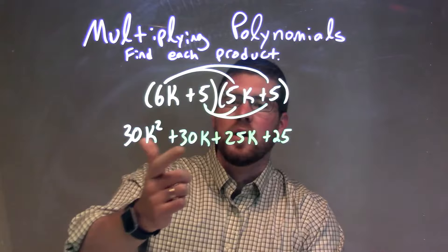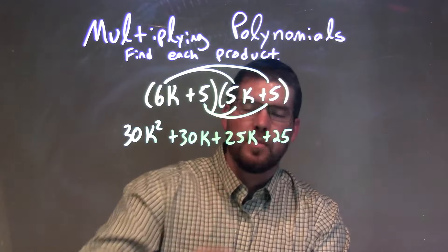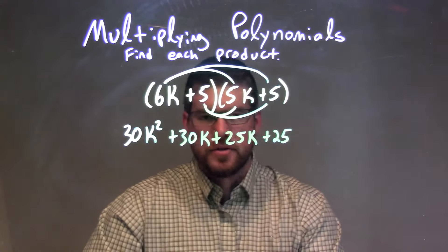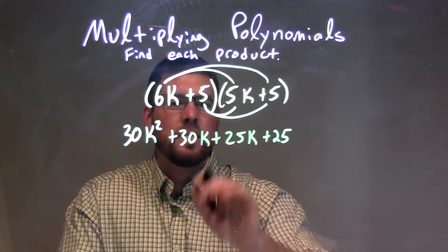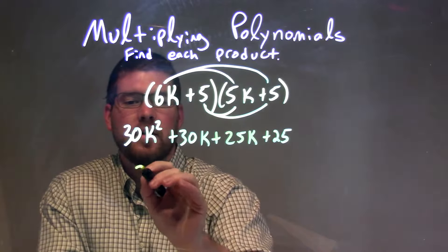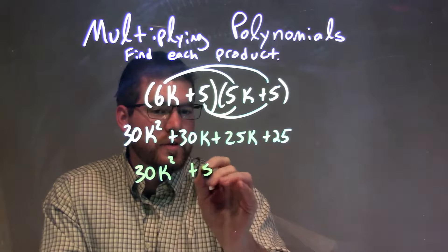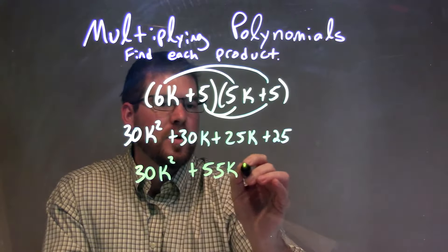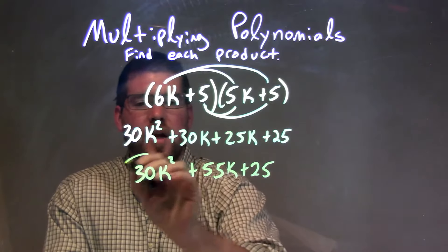So now we have 30k squared plus 30k plus 25k plus 25, and then you combine like terms, just the values with the k's in them. So that comes out to be 55k. So our final answer is 30k squared plus 55k plus 25, and there we go.